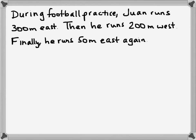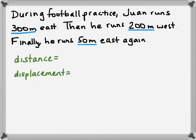Let's do a word problem. During football practice, Juan runs 300 meters east, then he runs 200 meters west, and finally he runs 50 meters east again. For distance, we just find the total ground he covers — we add all the individual distances listed in the problem: 300, 200, and 50 meters. So his total distance is 550 meters. That's pretty simple.